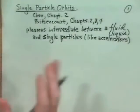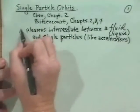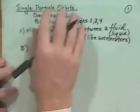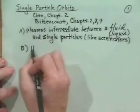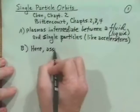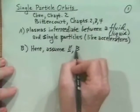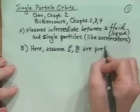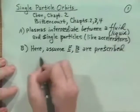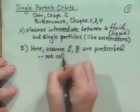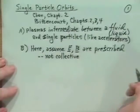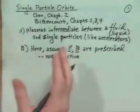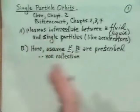In describing single particle orbits, we will assume that the electric field and the magnetic field are prescribed or given, and in particular, not collective. We'll come back to collective responses later. But for the moment, we want to say: if I prescribe the electric field and the magnetic field with certain magnitudes, what do the particle orbits look like?